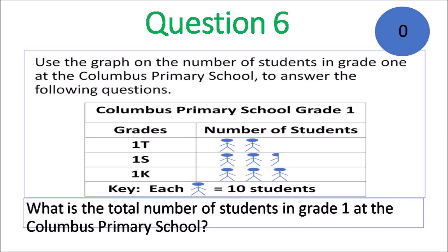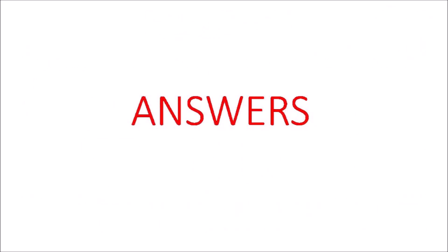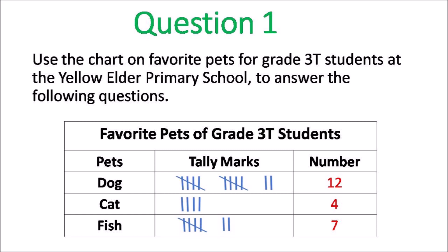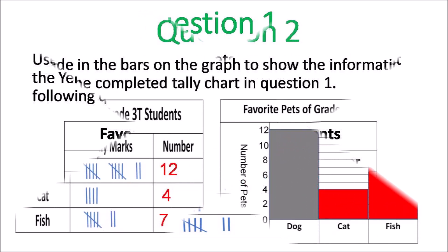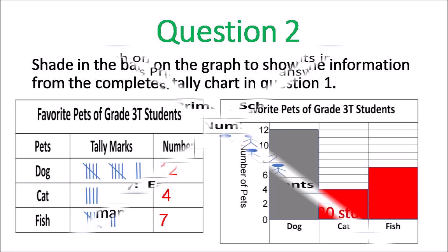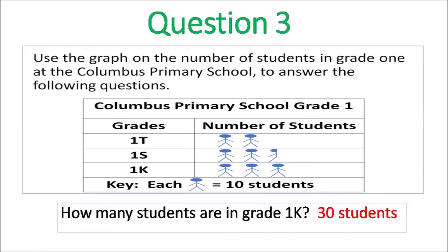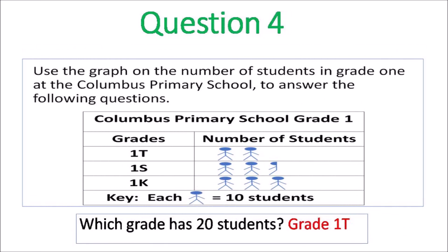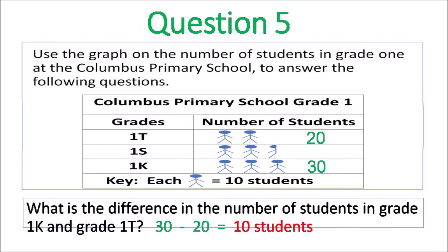Here we go with the answers. Question 1, numbers would be twelve, four, and seven using the tally marks. Question 2, you had to shade in using those numbers so you should get four and seven for cat and fish and you shade them in. Question 3, thirty students for grade 1K, three stick persons, each one is ten. Question 4, which grade has 20 students? Grade 1T, two stick persons.